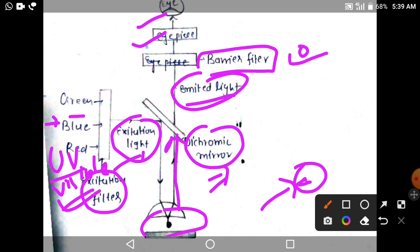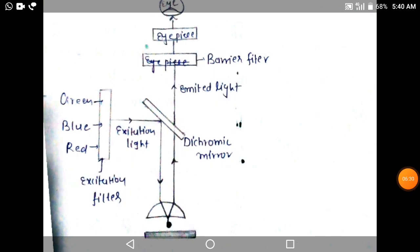This emitted light with longer wavelength creates fluorescence. I hope you are clear about fluorescence microscopy. In the next video lecture we will talk about the difference between TEM and SEM.